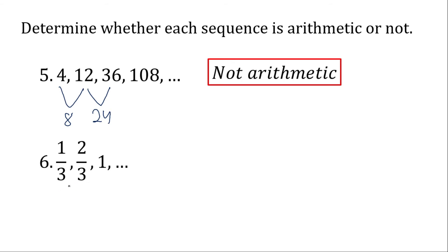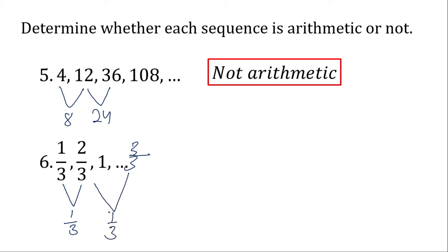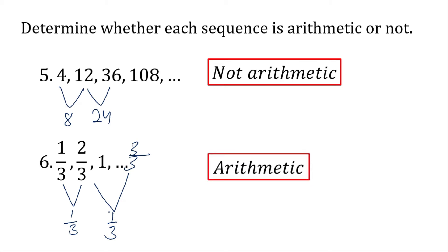Number 6 may seem confusing because of the fractions, but let's try to subtract. 2 over 3 minus 1 over 3 — since the denominator is the same, we subtract the numerators: 2 minus 1 is 1, which is 1 over 3. Then 3 over 3 minus 2 over 3 is also 1 over 3. They have a common difference, so we can call this an arithmetic sequence.